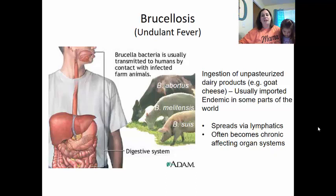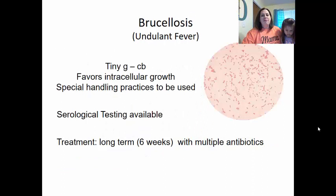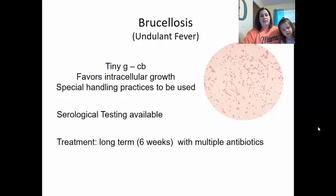Brucellosis bacteria are tiny gram-negative coccoid bacteria that favor intracellular growth — they like to get inside cells that perform phagocytosis in your immune system. Special handling is needed to transport and grow them in the lab, as they can get into the air easily. Serological testing is available since they hide inside cells, and treatment is long-term six weeks with multiple antibiotics.